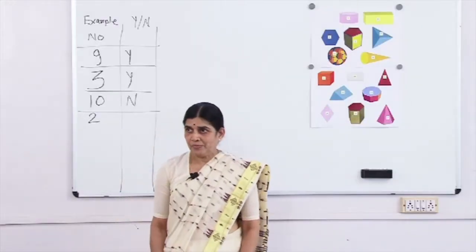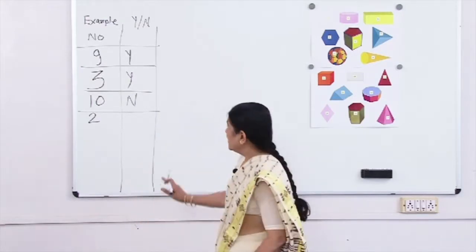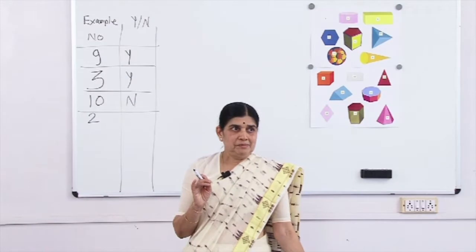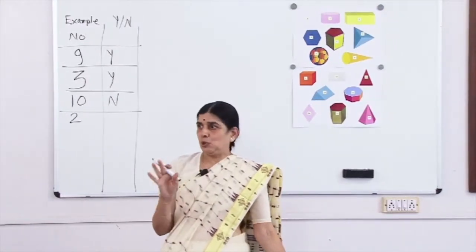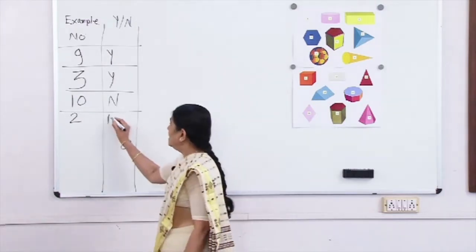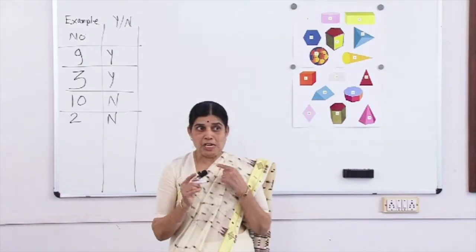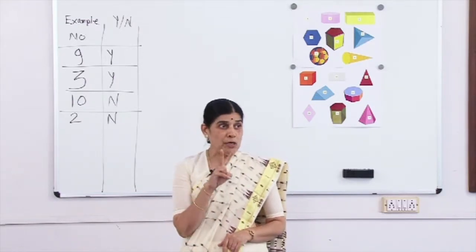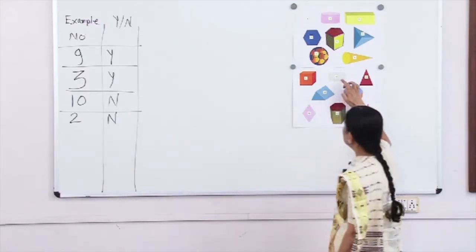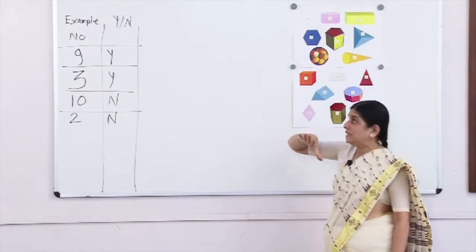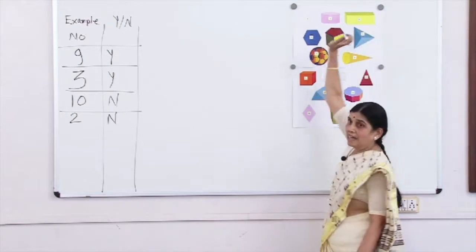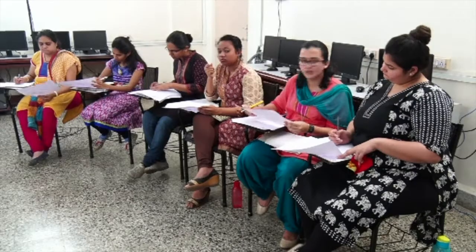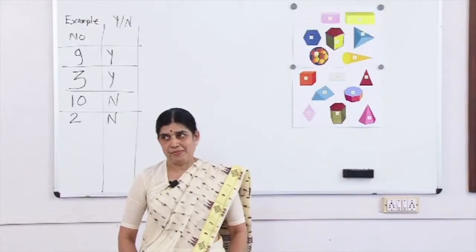How many of you think that number 2 is similar to number 9 and 3? Some agree, some do not agree. My answer: it is a non-example. Now again you have to change your hypothesis and write that down. So now we have got two non-examples — 10 and 2 — and number 9 and 3 are positive examples. Think about the different characteristics.